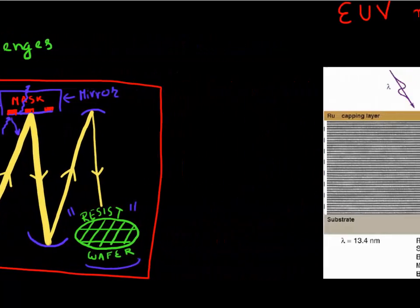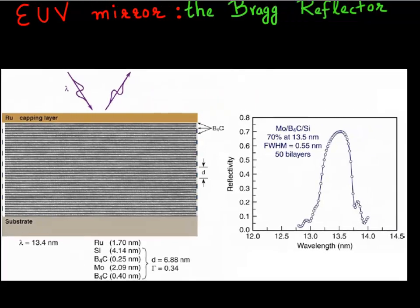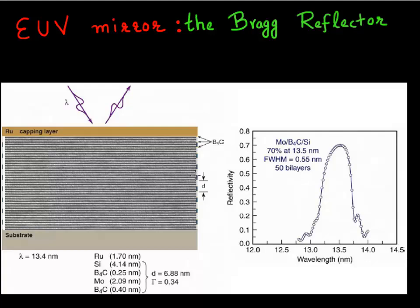These are very special kind of mirrors and this describes essentially what each of these mirrors is. So each of these mirrors essentially consists of around 50 of these bilayers.